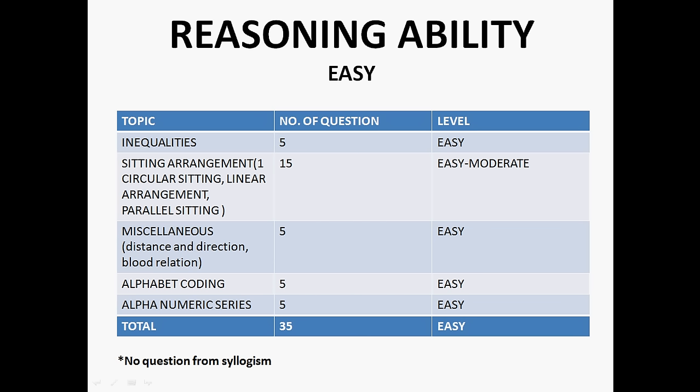There were 5 questions from miscellaneous which was of easy level. In miscellaneous, questions were like direction sense, distance and direction, blood relation. There were 5 questions from alphabet coding which was of easy level, and 5 questions from alphanumeric series which was also easy. So overall reasoning was of easy level and there were no questions from syllogism.